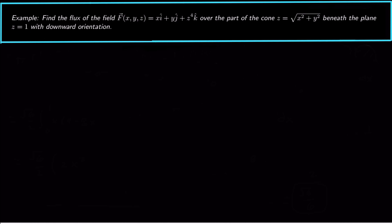Hey guys, what's up? Today we're looking at finding the flux of a vector field across a surface. The flux of the field we want to find is x i-hat plus y j-hat plus z to the 4 k-hat. We want to find the flux of this field over the part of the cone z equals square root of x squared plus y squared beneath the plane z equals 1.